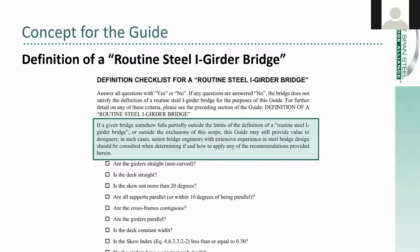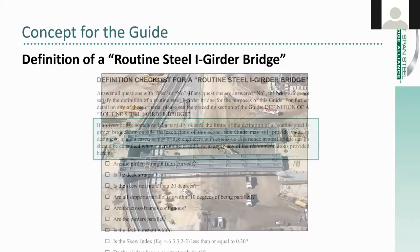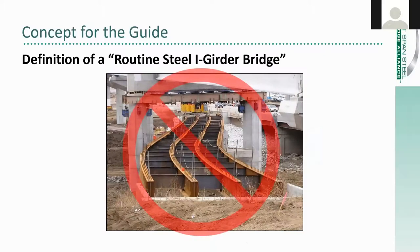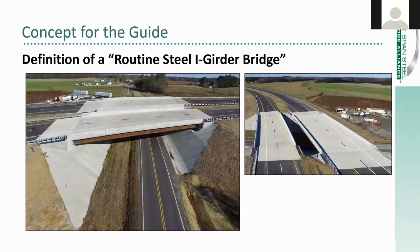The guide includes a simple checklist. If you answer no to any of the questions, the bridge does not satisfy the definition of a routine steel I-girder bridge for the purposes of this guide. But we do allow a little bit of wiggle room — a little room to exercise some engineering judgment. The key criteria is that it would still be reasonable and not debatable to design the bridge using line-girder analysis. Here's an obvious example of a pair of bridges that would fit the definition, and here's an example of a bridge that would not. There are also a couple of bridges that probably fit — straight bridges with straight girders, not too severe of a skew, reasonable span lengths, and in one case a slightly curved deck, but these bridges could and were designed using line-girder analysis.